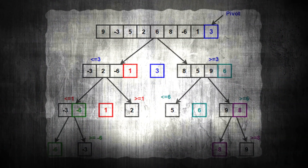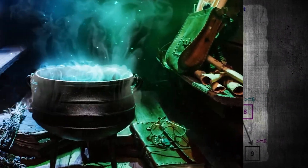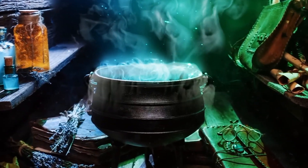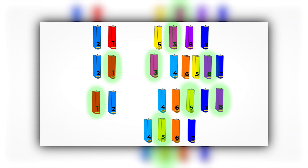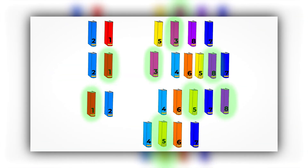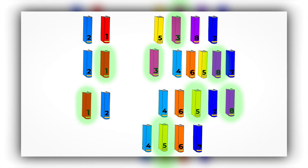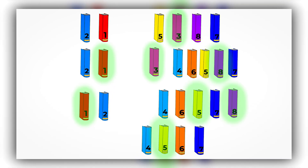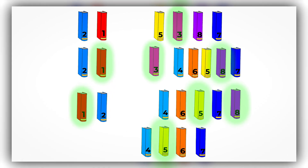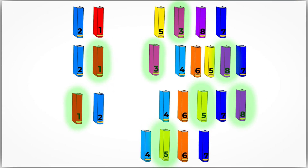The magic of quicksort lies in its recursive nature, like a potion that brews itself. Each time we partition the books, we create smaller sorting problems that are easier to solve. By solving these smaller problems, we ultimately solve the larger problem of sorting the entire pile.